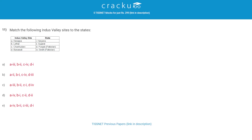Match the following Indus Valley sites to their states. The correct answer is A. Harappa corresponds to Punjab, Pakistan. Lothal corresponds to Gujarat. Chanhudaro corresponds to Sindh, Pakistan. Banwali corresponds to Haryana.